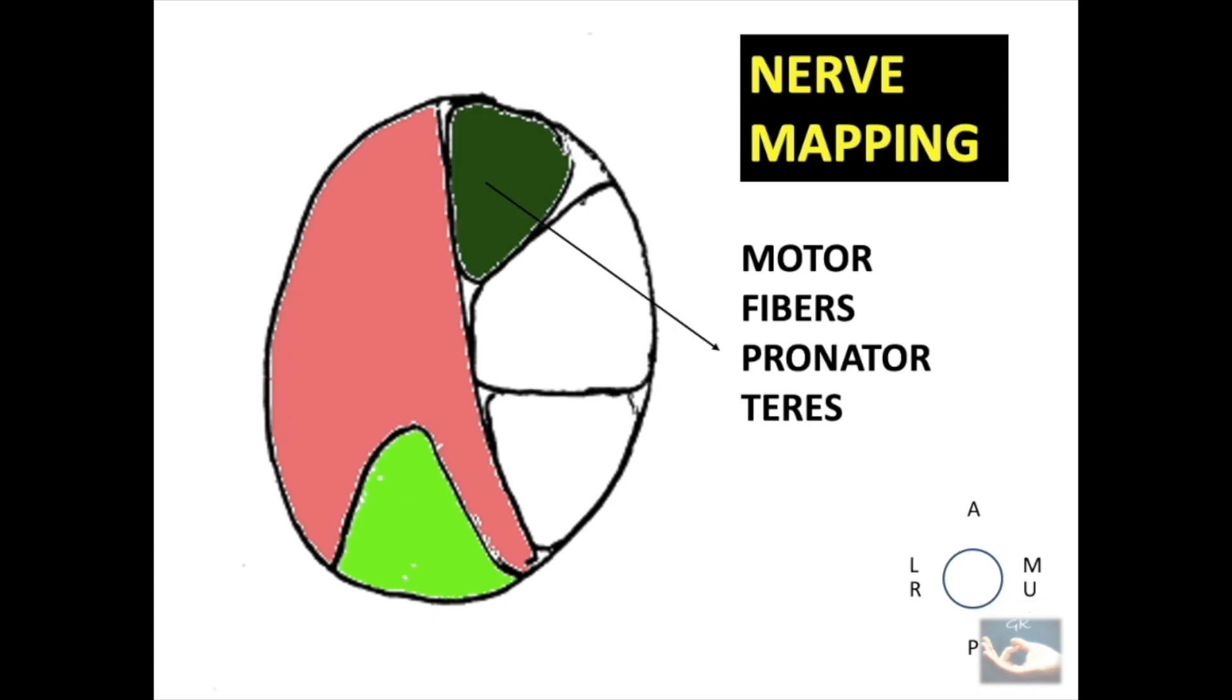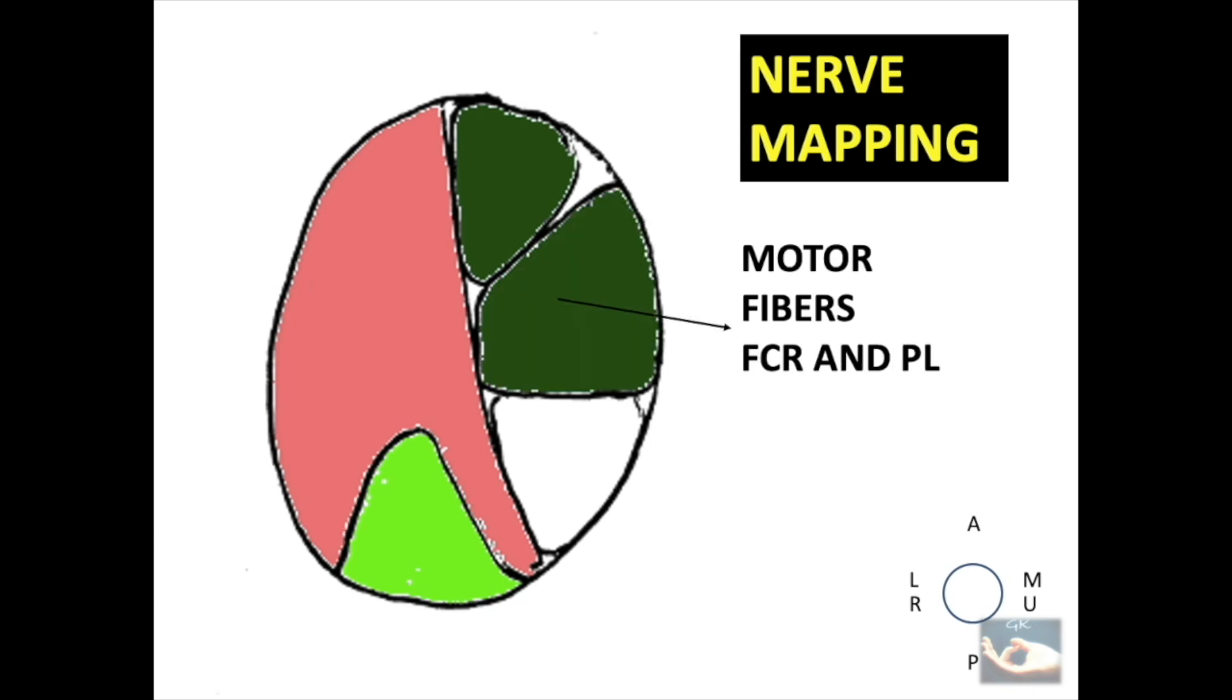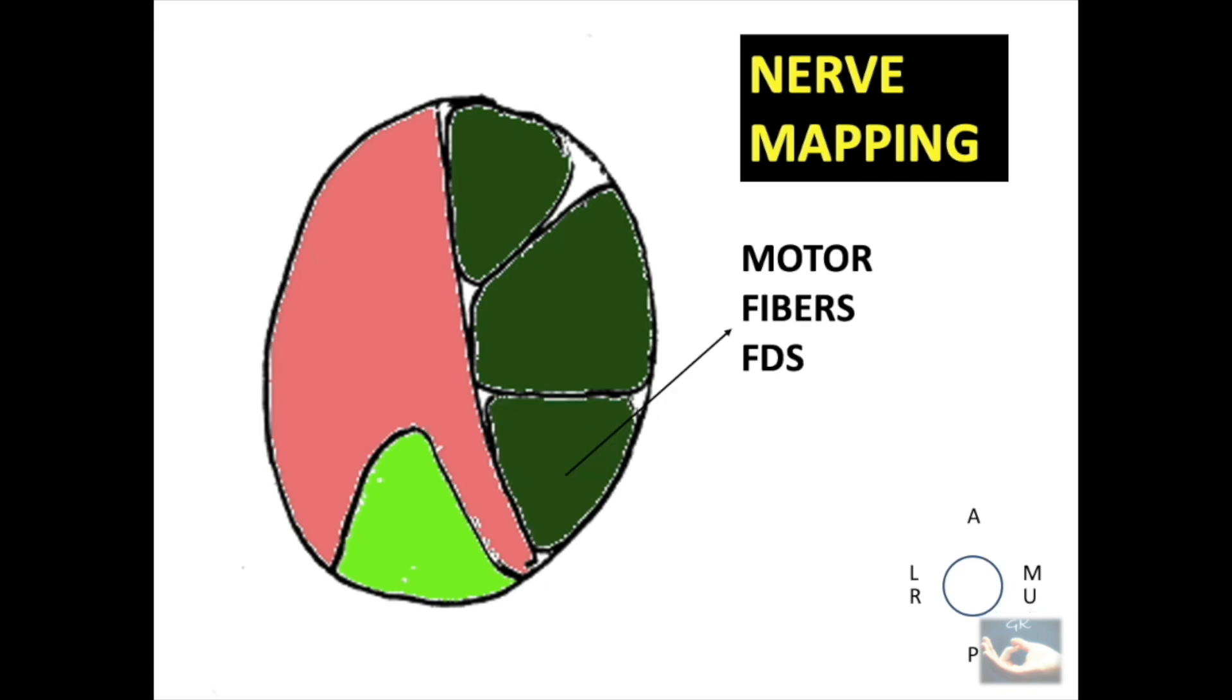On the medial side, the superior third is occupied by the motor fascicles destined for the pronator teres. The middle third consists of motor fibers going to the flexor carpi radialis and palmaris longus. And the lower third of the medial half of the nerve consists of fibers destined for the flexor digitorum superficialis muscles.